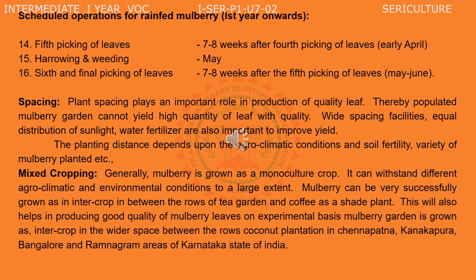Coming to mixed cropping: generally, mulberry is grown as a monoculture crop. It can withstand different agroclimatic and environmental conditions to a large extent. Mulberry can be very successfully grown as an intercrop in between the rows of tea gardens and coffee as a shade plant. On an experimental basis, mulberry is grown as an intercrop in the wider spaces between rose and coconut plantations in Channapatna, Kanakapura, Bangalore, and Ramnagaram areas of Karnataka state. Mixed cropping is another good factor for mulberry cultivation.